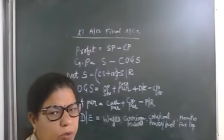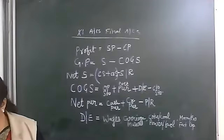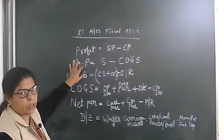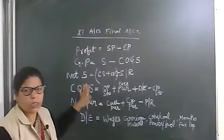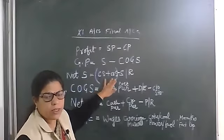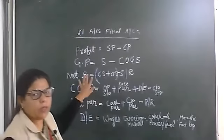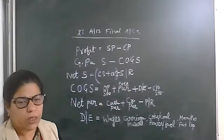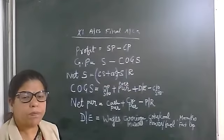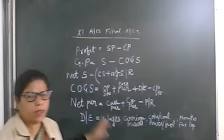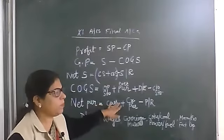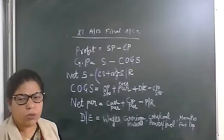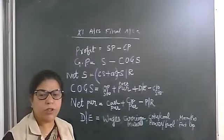I am sure you will all be able to understand these formulas. To recap: gross profit equals sales minus cost of goods sold. Net sales equals cash sales plus credit sales minus sales return. Cost of goods sold equals opening stock plus net purchases plus direct expenses minus closing stock. COGS full form: cost of goods sold. Net purchase equals cash purchase plus credit purchase minus purchase return. Direct expenses means wages, carriage inward, coke, coal, power, fuel, and all manufacturing, production, and factory expenses.